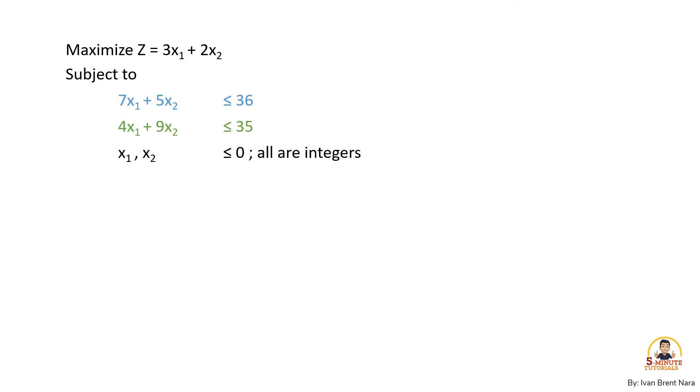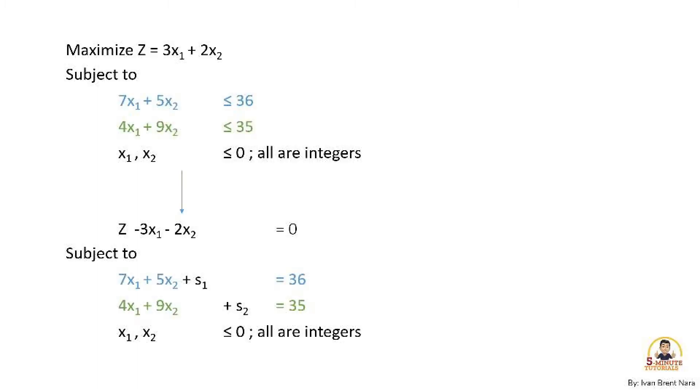In preparation for our tableau, convert the problem into a standard form. The objective function will be Z - 3x₁ - 2x₂ = 0, subject to the constraint below.